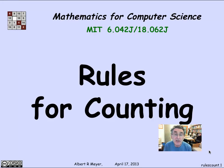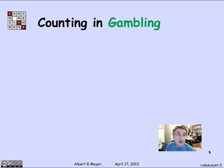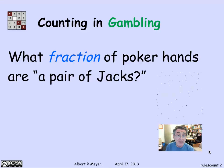The topic of counting or combinatorics is an important one in a number of different disciplines, and notably in computer science. The origins of combinatorics and counting are a little bit disreputable. They come out of, historically, people studying gambling and trying to calculate odds and the fraction of times that various events occur, to know what kind of bets to make on them.